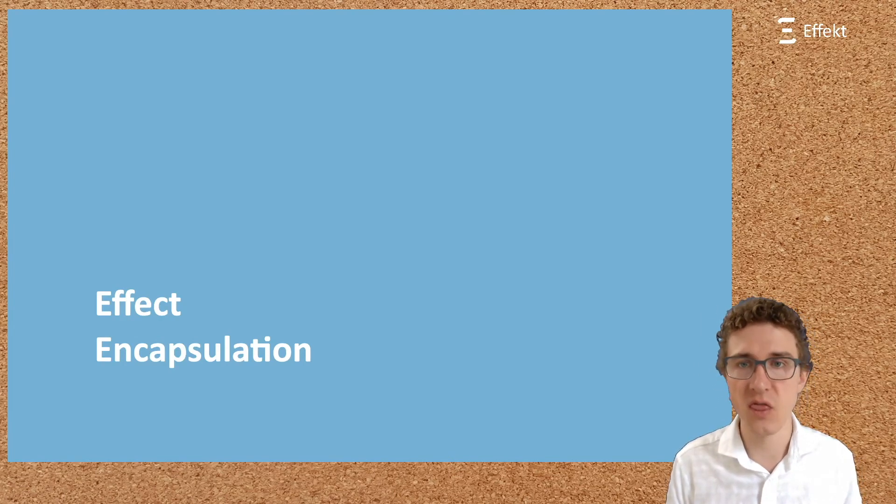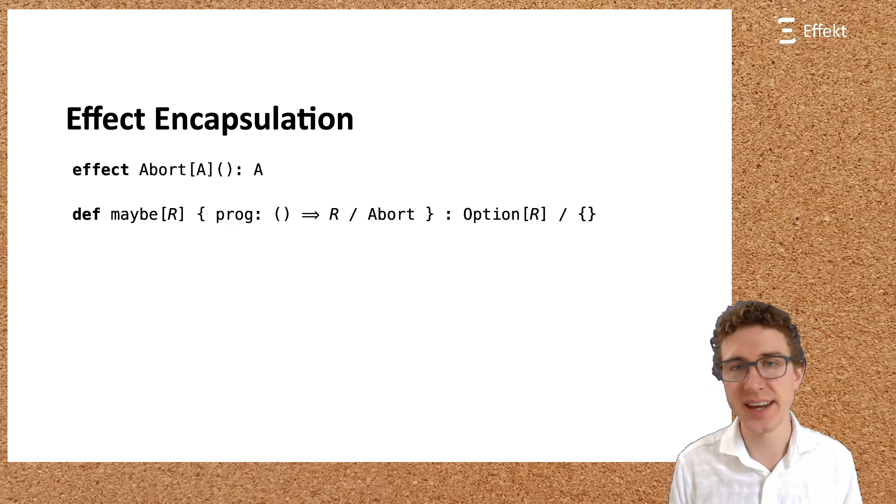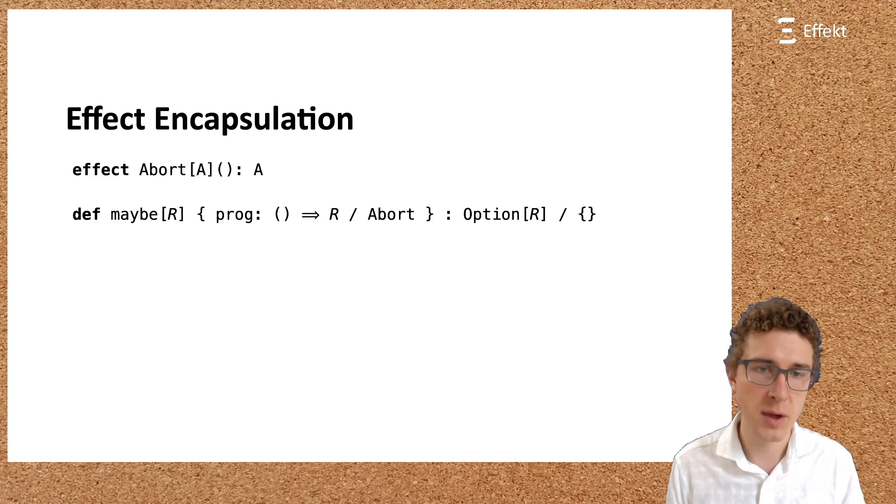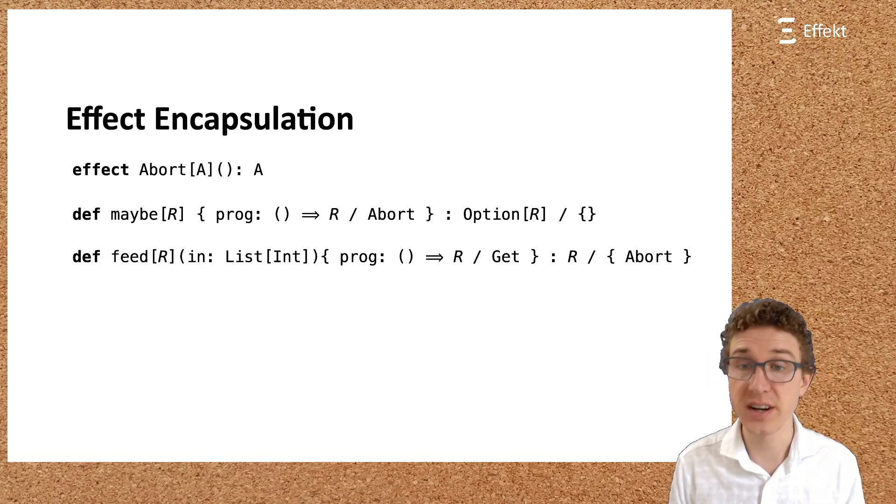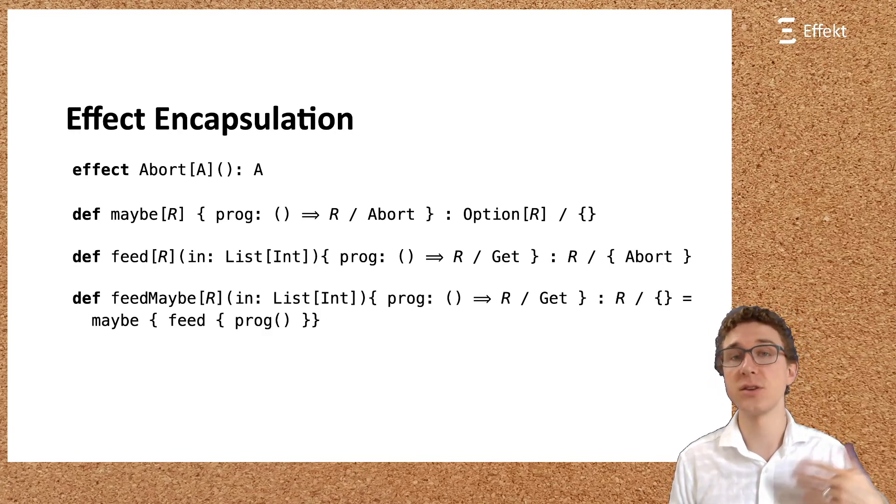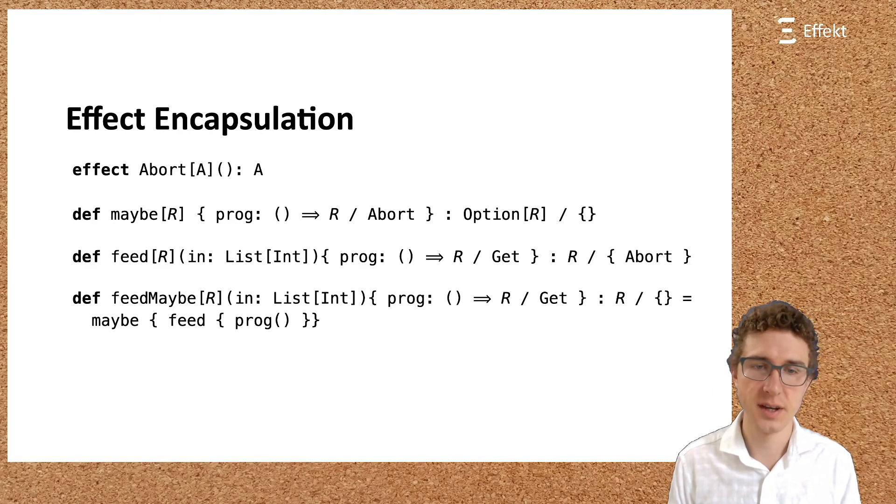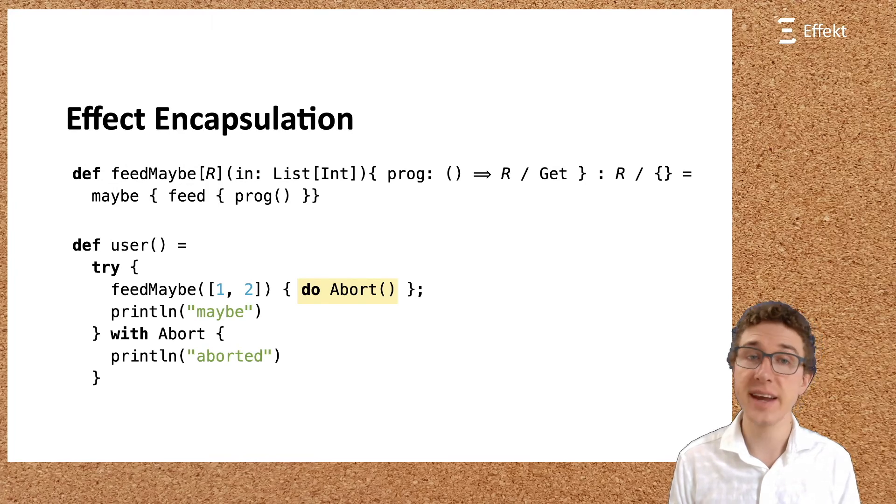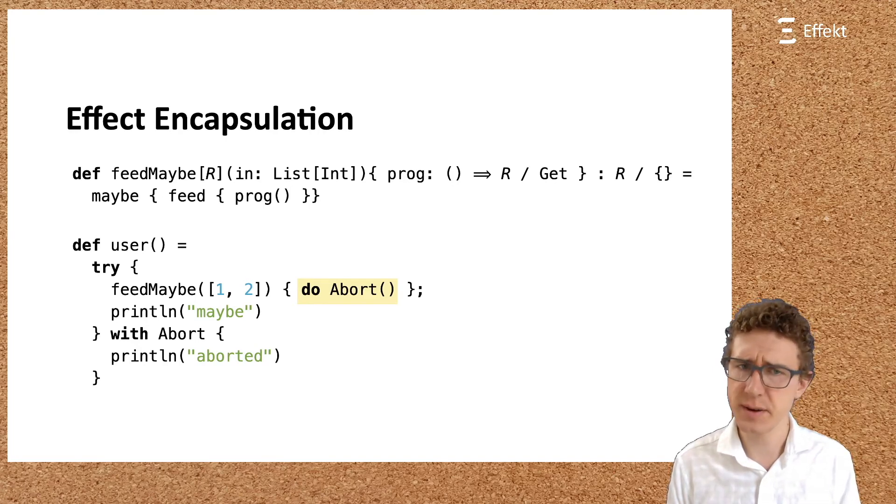Related to the topic of effect polymorphism is another important topic, effect encapsulation. To discuss effect encapsulation, let us assume another effect called a board. We also define a handler, maybe, that handles a board into an optional value. In the following, we adapt an example from the JFP paper, Dubi Dubi Dubi Do by Convent et al. But first, we need some more prerequisites. We define a handler, feed, that handles our get effect by reading values from a given list. In case there are no more elements, we use the abort effect. We can now compose the two handlers to obtain a new handler called feed maybe that uses the maybe handler to handle the abort effect used by feed. Now, let us assume the following user code. In the function user, we call feed maybe with a block that performs the abort effect. What is the expected result of running this example? There are multiple possible outcomes.